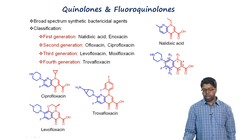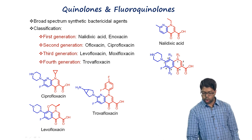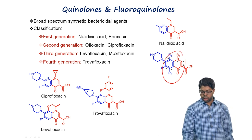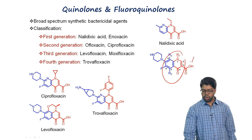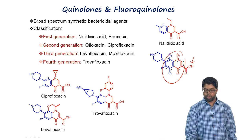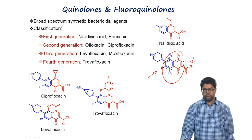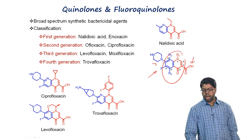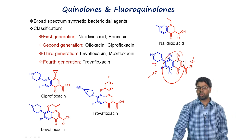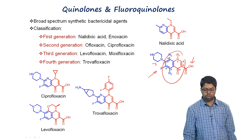Fluoroquinolones share a common core quinolone structure. A carboxylic acid is present at the third position, fluorine at the eighth position, and a piperazine or amine-based substituent at the seventh position. All these substituents are essential for inhibiting DNA gyrase and topoisomerase IV.